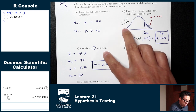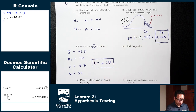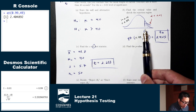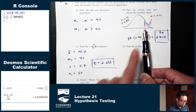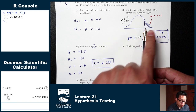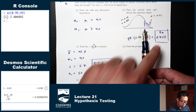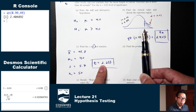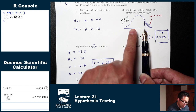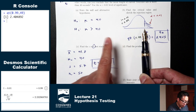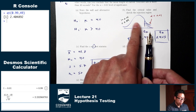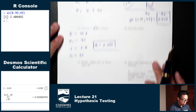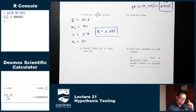Using the critical value approach to preview the decision: T-star is 2.405. Our test statistic is 2.233. On a number line, 2.233 is to the left of 2.405, which puts it in the unshaded region. If you're in the shaded region you reject; if you're in the unshaded region you don't reject. So we expect the result at Part E to be don't reject.